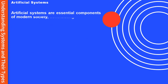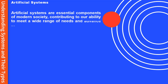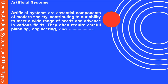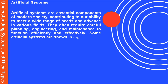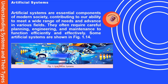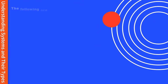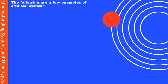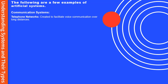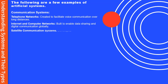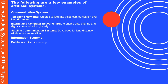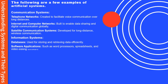Artificial systems are essential components of modern society, contributing to our ability to meet a wide range of needs and advance in various fields. They often require careful planning, engineering, and maintenance to function efficiently and effectively. Some artificial systems are shown in FIG 1.14. Examples include satellite communication systems developed for long-distance wireless communication, information systems such as databases used for storing and retrieving data efficiently, and software applications such as word processors, spreadsheets, and video editing software.